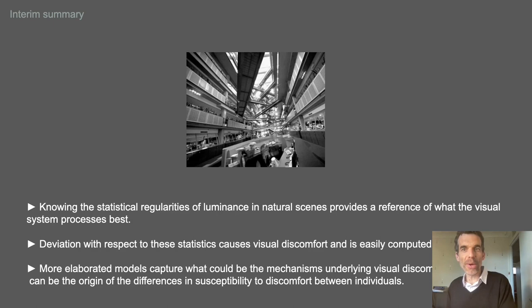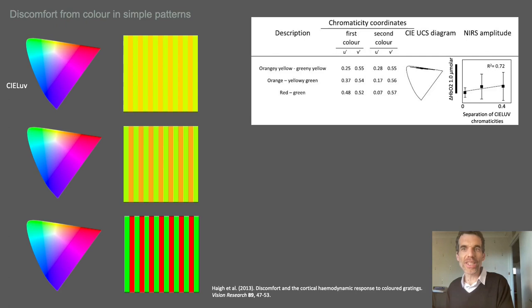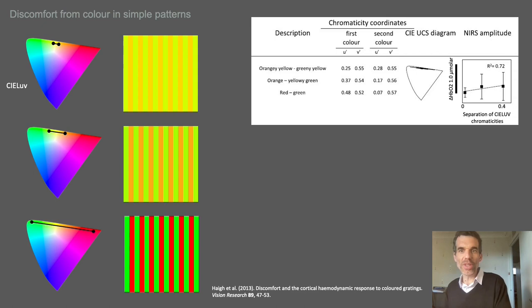As an interim summary: knowing the statistical regularities of luminance in natural scenes provides a reference for what the visual system processes best; deviation from this statistic causes visual discomfort and can be easily computed; and more elaborated models capture the mechanism underlying visual discomfort and the origin of differences in susceptibility between individuals. All of this has been about luminance. What about colour? Is there any contribution of colour to visual discomfort? We know that this is the case in simple geometrical stimuli — Hague and Wilkins measured both metabolism and discomfort from coloured gratings made of two colours with different separation in chromaticity computed in the CIELuv perceptual colour space, and increased chromaticity differences were consistently associated with increasing hemodynamic responses.